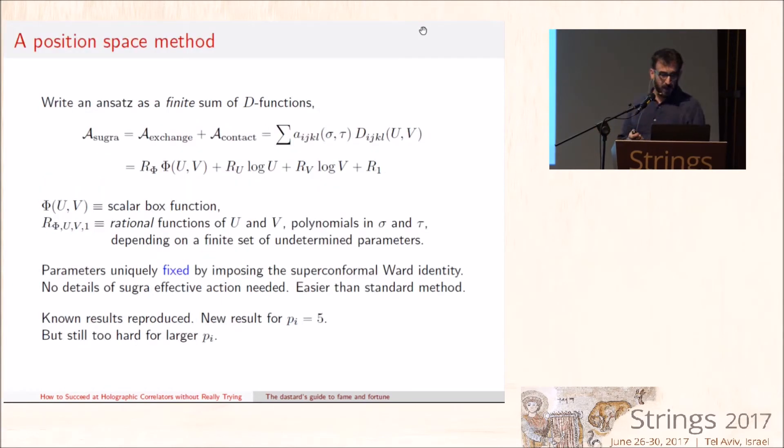Now really what you're after is computing this curly H because the symmetries have done all that they could do for you. So our first go at the problem was the following simple thought. Why should we do all this work painfully computing the vertices in supergravity? Let's just write an ansatz in terms of the appropriate class of special functions and impose Ward identities. Since we know that exchange diagrams must reduce to a finite sum of contact diagrams, let's just write an ansatz of this kind where this is an appropriate set of contact diagrams.